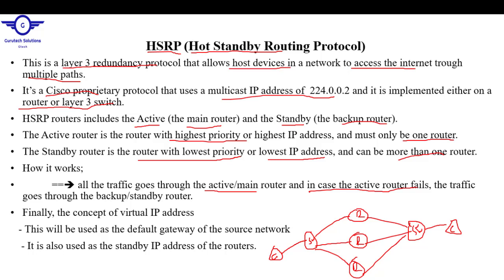How does HSRP work? Assume this is our main router — the Active Router. All traffic from user one to user two will follow the main router. But in case the main router is down, one of the backup routers will pick up. This is redundancy in the network.